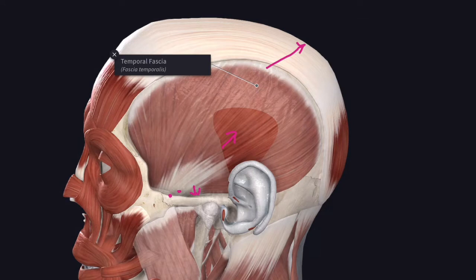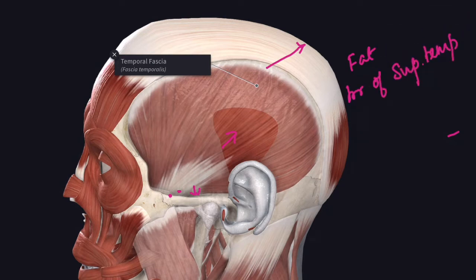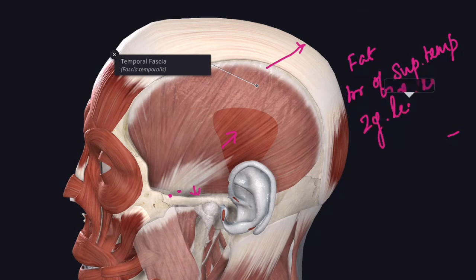The gap between these two layers contains fat, branches of the superficial temporal vessels, and the zygomaticotemporal nerve. These three are the contents present between the two layers of the temporal fascia.